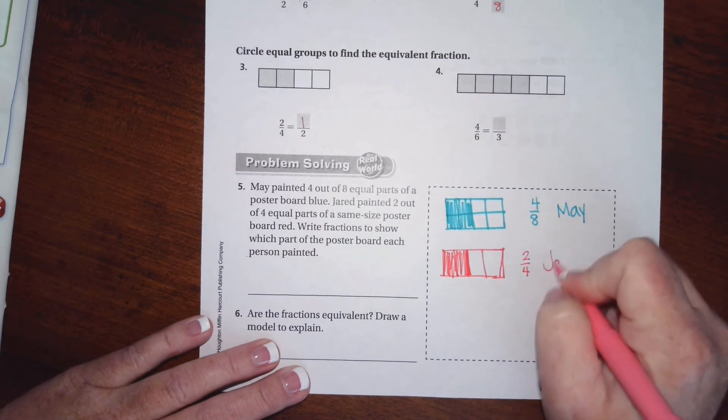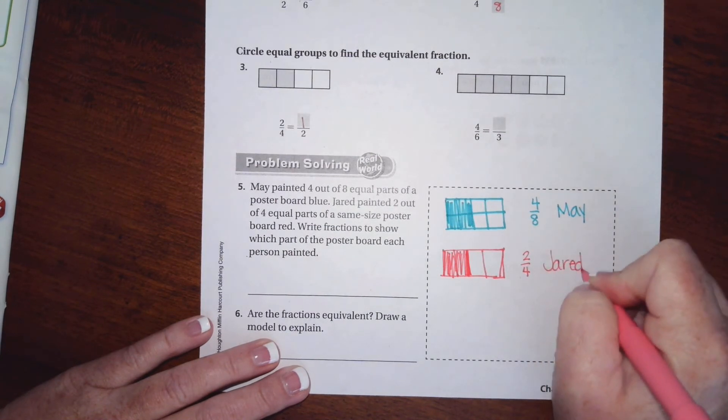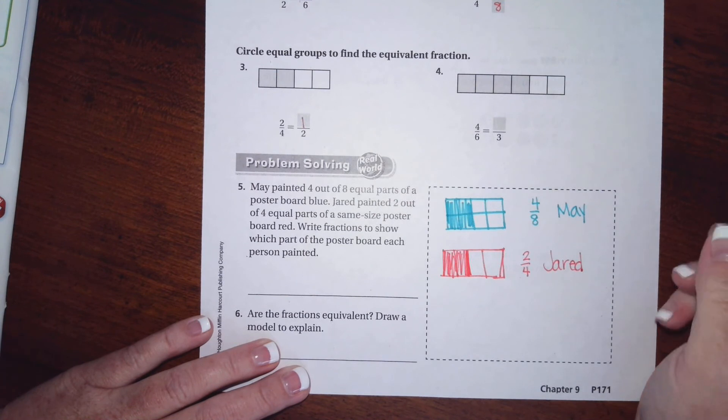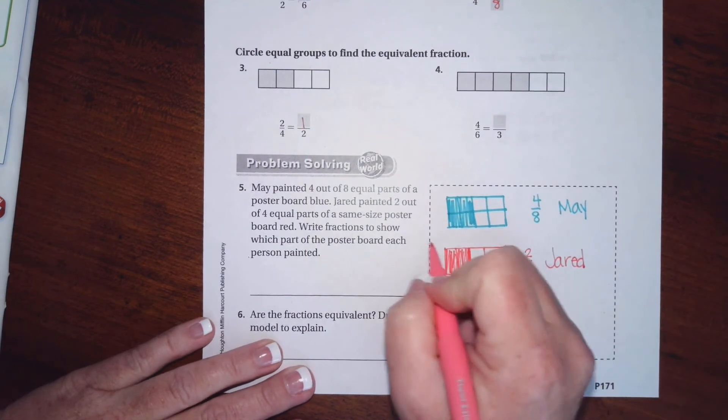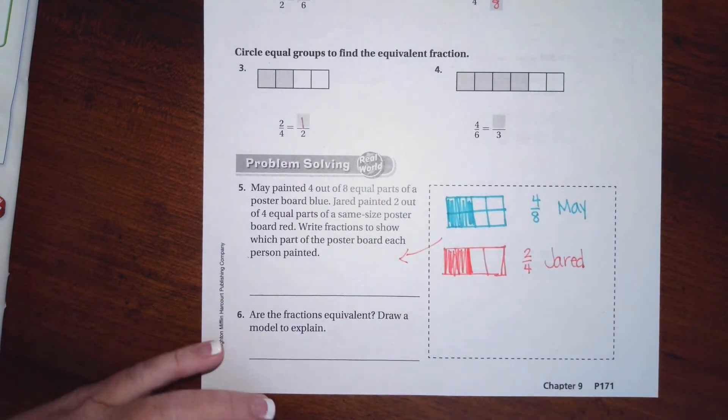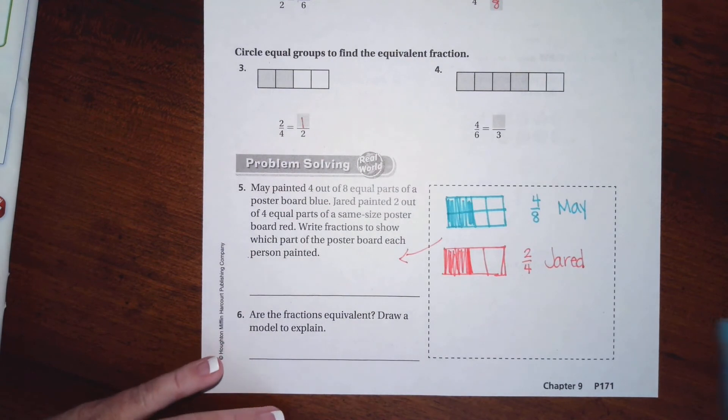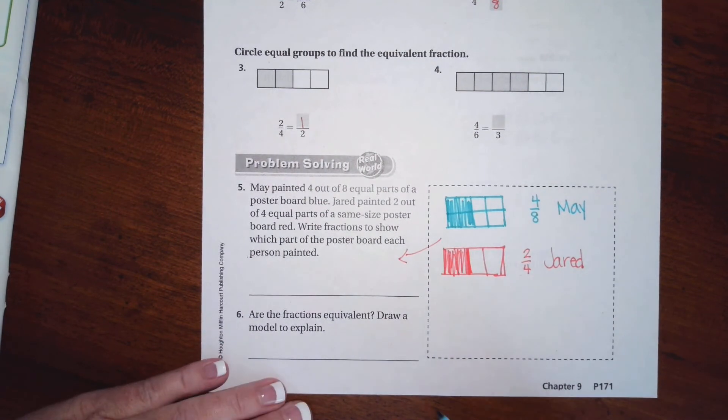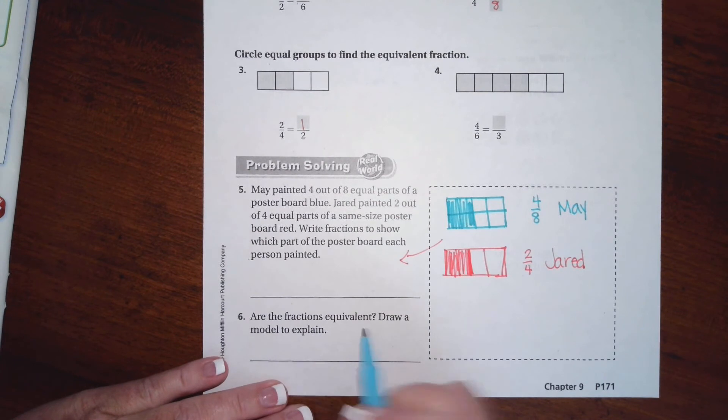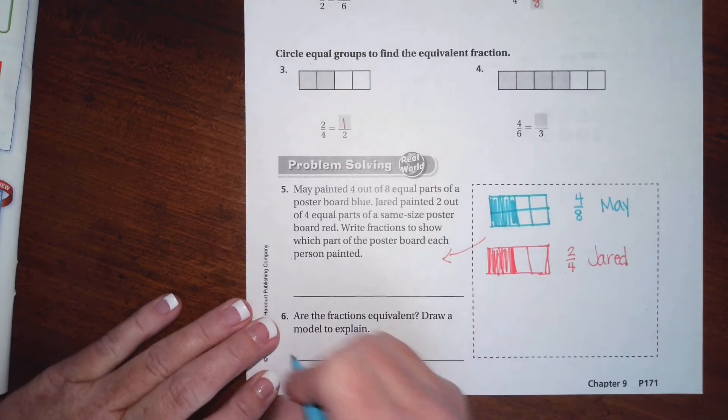This one is May, this one is Jared, and that's all you had to do for that one. Are the fractions equivalent? So did we draw about the same amount right here? We sure did, so yes.